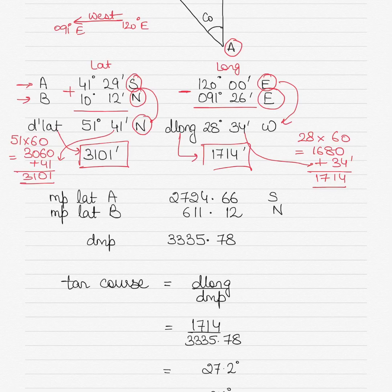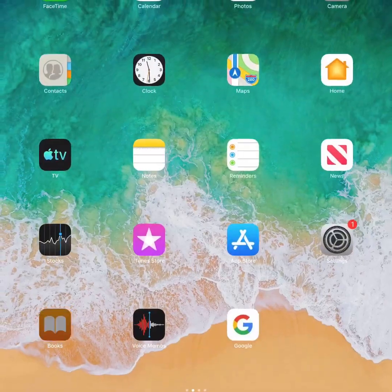Then the other thing you have to do is calculate the meridional parts, or MP, of latitude A and MP of latitude B. So your latitude A is 41 degrees 29 minutes. Latitude B is 10 degrees 12 minutes. So you have to calculate for both the latitudes from the meridional parts table, as you would find in the Norris tables. So if you have Norris tables, you have the meridional parts tables given to you. Otherwise, I'll show you what they look like.